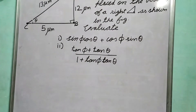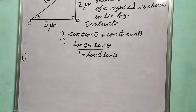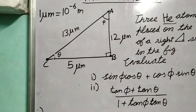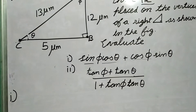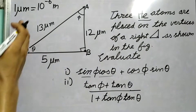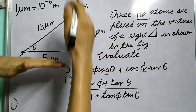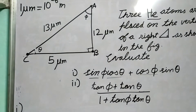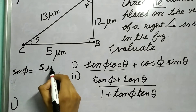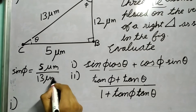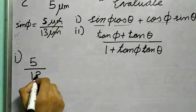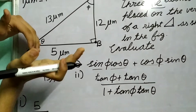Now let's evaluate the first part: sin φ cos θ plus cos φ sin θ. Using basics — sin is perpendicular over hypotenuse — from φ's point of view, CB is the perpendicular, so sin φ equals 5 over 13. Then cos θ is base over hypotenuse; from θ's point of view BC is the base, so cos θ equals 5 over 13.